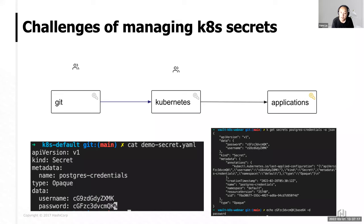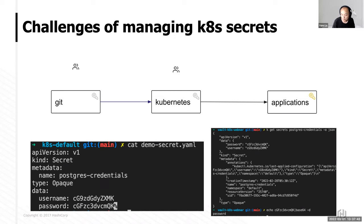You have secrets everywhere — in the Kubernetes cluster itself, in Git, and sometimes on people's laptops. You have no way of monitoring who has access to, who has read the secrets, who has used the secrets — have I made sure that after seeing these secrets, someone hasn't taken a screenshot or written it down on a Post-it note stuck onto their screen? That's the sort of issue we are facing as an application owner. If we want to run our applications, we have so many risks to worry about.